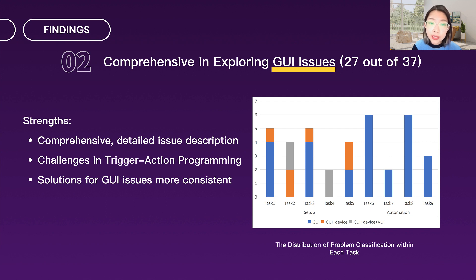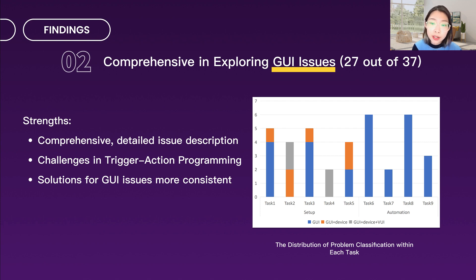Regarding challenges in the trigger-action programming paradigm, we identified automation-related issues that are all under GUI concerns. This highlighted the disconnection between automation processes and actual smart home interactions, hindering intuitive and cost-effective programming. We also found that solutions for GUI issues are more consistent, and evaluators could rapidly reach consensus.